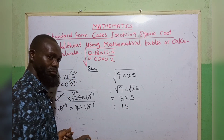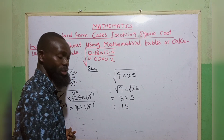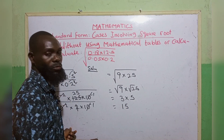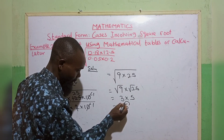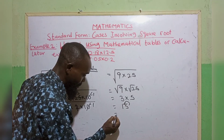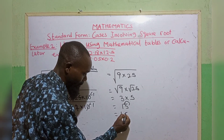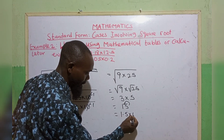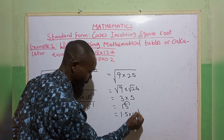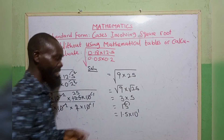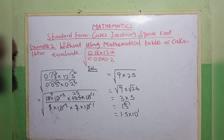Putting 15 into standard form, we introduce the decimal point after the first digit, giving us 1.5. Since we are moving forward once, the answer is 1.5 times 10 raised to the power of 1.